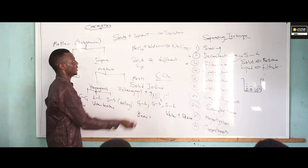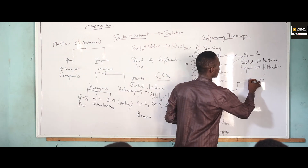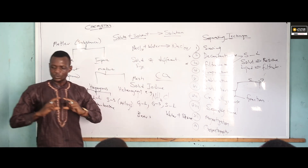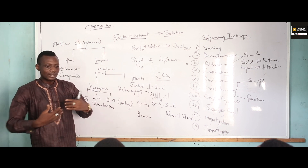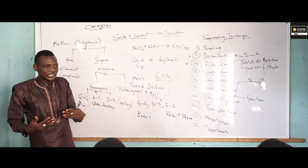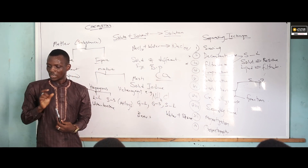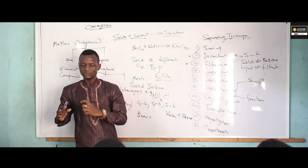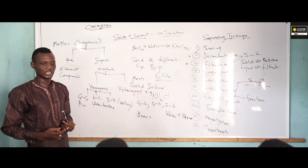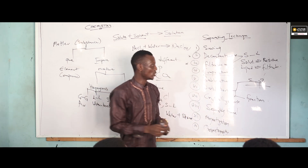The next one is distillation. Distillation is used to recover solvent from solution. We have two types: simple distillation and fractional distillation. In simple distillation, we have miscible liquids — two liquids that can interact together, for example polar liquids. If the liquids mixed together have a wide difference in their boiling points, we use simple distillation. If the difference in boiling point is small — they are close together — we use fractional distillation.